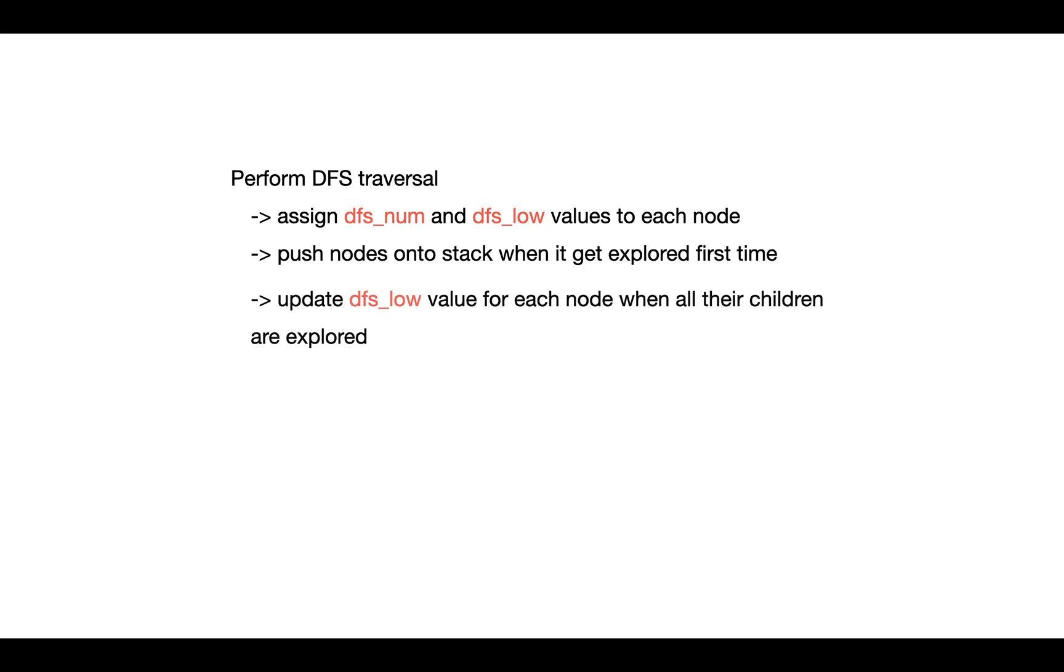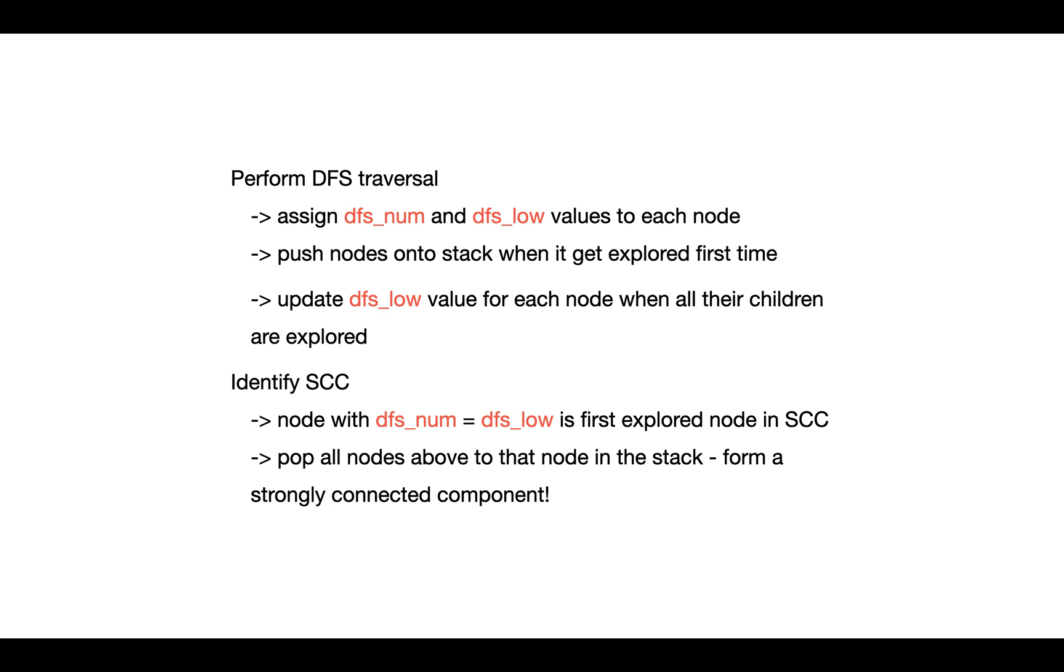We keep updating the DFS_low value for each node when we finish traversing all of its child nodes. And whenever we come across a node that is having DFS_num equals to the DFS_low value, we pop out all the nodes above in the stack and those nodes will form a strongly connected component. So that was all about this algorithm. I hope you got the concept.